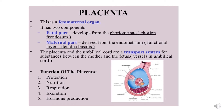The human placenta belongs to the hemochorial type, in which the maternal blood comes in direct contact with the fetal chorionic layer. Developmentally, the placenta consists of two parts: the fetal part, which develops from the chorionic sac and is known as chorionic frondosum, and the maternal part, which is derived from the endometrium — specifically the functional layer known as decidua basalis.